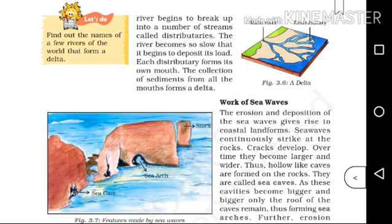Looking at the coastal landforms diagram: the sea waves continuously strike the rock face, causing cracks to develop. The cracks form a hollow curve called a sea cave. The sea cave then forms a sea arch. Further erosion of the sea arch forms a stack — just the walls remain with the roof gone. The steep rocky coast rising almost vertically above sea water is called a sea cliff.